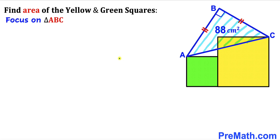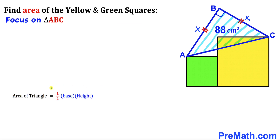Let's get started. Focusing on blue triangle ABC, we know that side AB equals side BC. Let's label side AB as x, so side BC is x as well. The area is given as 88 cm². Recalling the area of a triangle formula — area equals one-half times base times height — our base is x and our height is x as well.